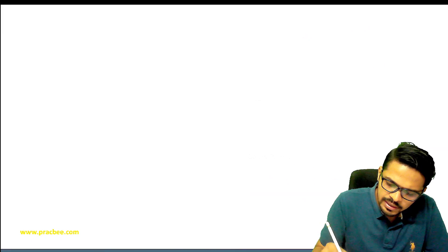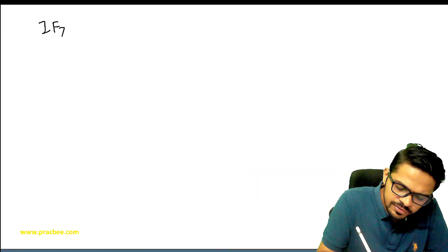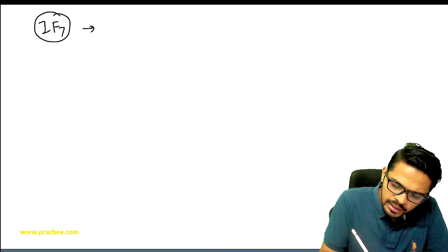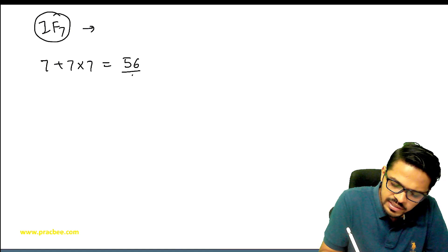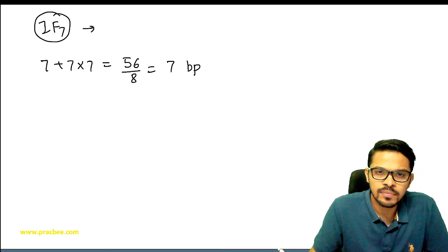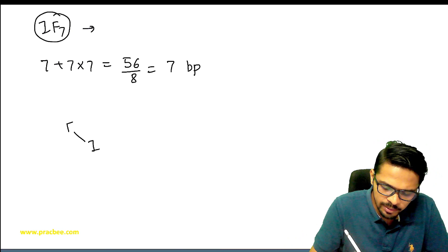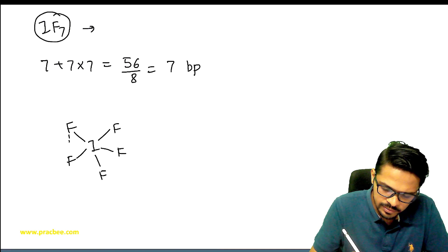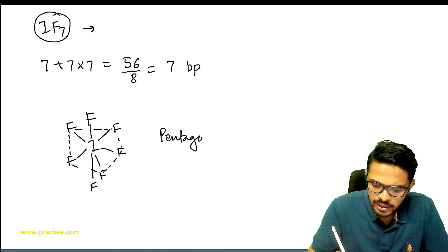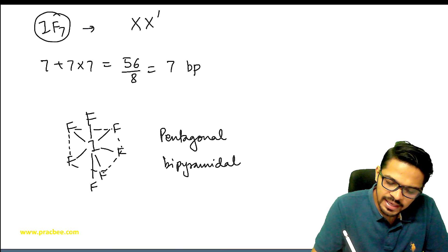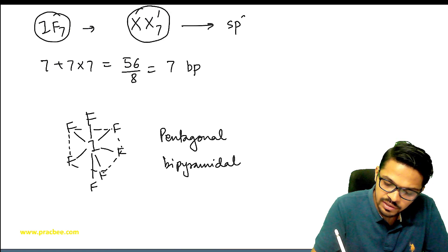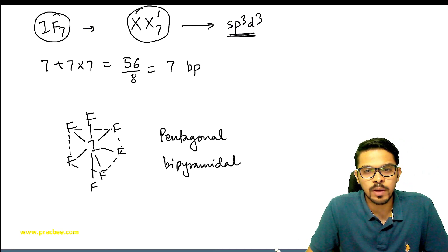Next, let's talk about IF7. Total number of electrons, it comes out as 56. Divide by 8, we get 7 bond pairs. Seven bond pairs means iodine in the plane is catering to five fluorines, which makes it a pentagon. Here's the pentagon, and one fluorine above and below. So this is pentagonal bipyramidal. So any XX'7 type species will have sp3d3 hybridization and pentagonal bipyramidal shape.